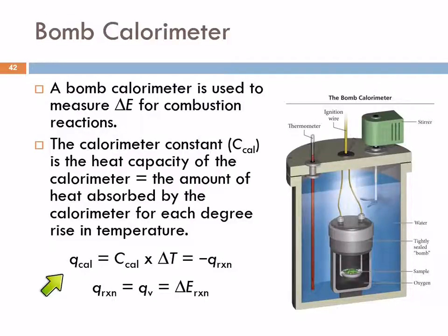The heat lost by this combustion reaction is transferred to the calorimeter, and we can measure it in the temperature increase. Q for the calorimeter is this calorimeter constant, which is just a heat capacity, times the change in temperature. Because you're using the same calorimeter all the time, you don't have to worry about measuring this every time. Q cal is equal to Q reaction, but opposite in sign. Q reaction is equal to the change in internal energy for the reaction.